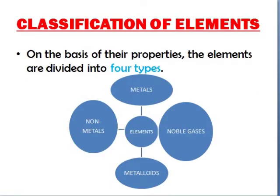Classification of elements: on the basis of their properties, the elements are divided into four types. The four types of elements are metals, non-metals, metalloids, and noble gases.